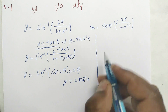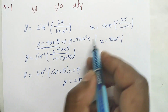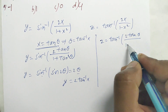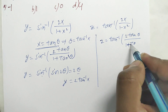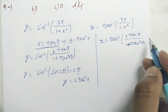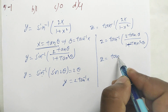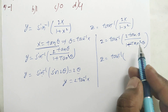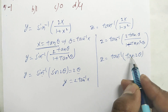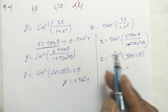Similarly for Z: with x = tan θ, we get Z = tan⁻¹(2·tan θ/(1−tan²θ)). Now, 2·tan θ/(1−tan²θ) is the tan 2θ formula. So tan⁻¹(tan 2θ) gives Z = 2θ = 2·tan⁻¹(x).